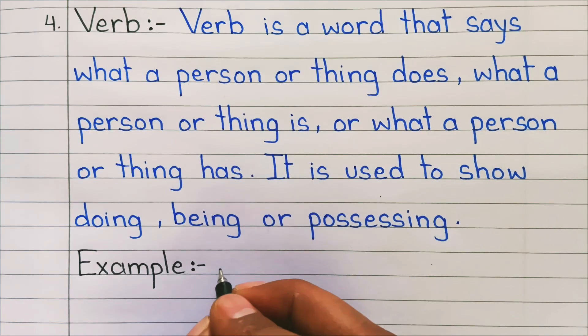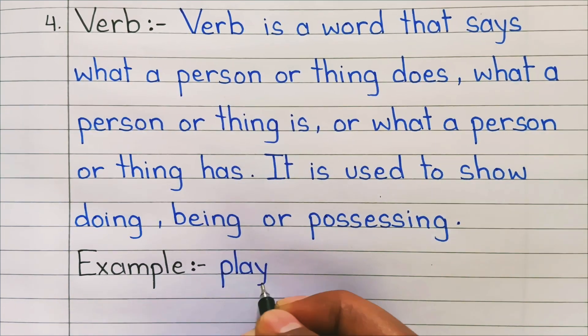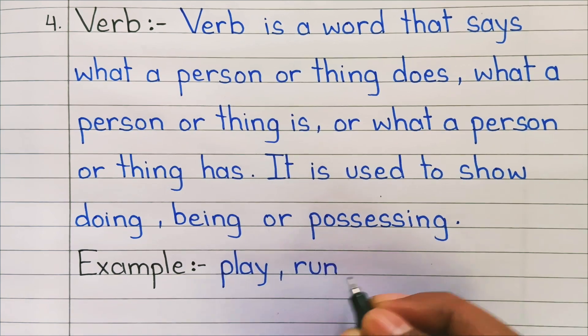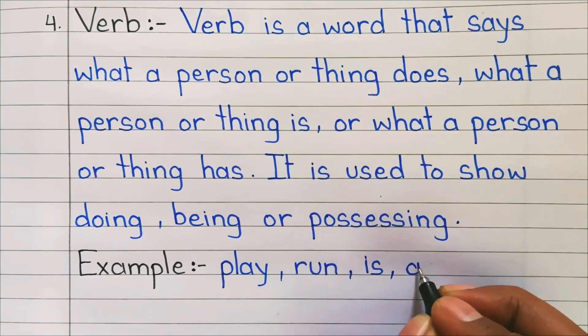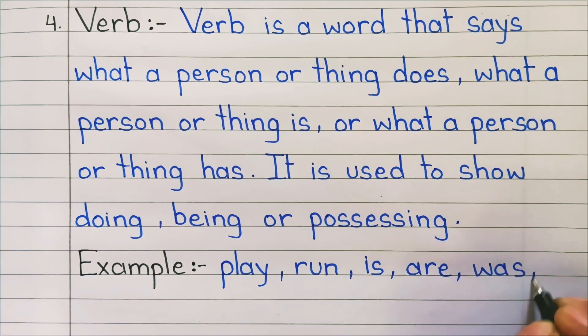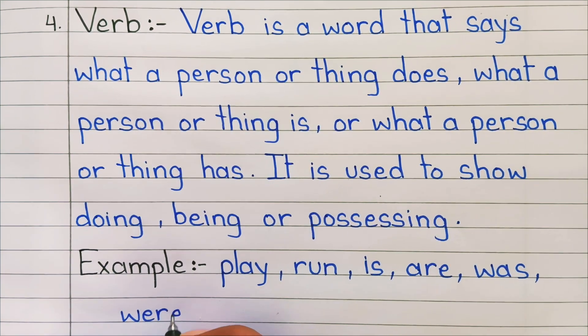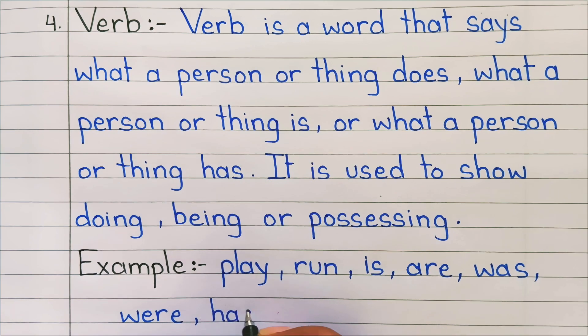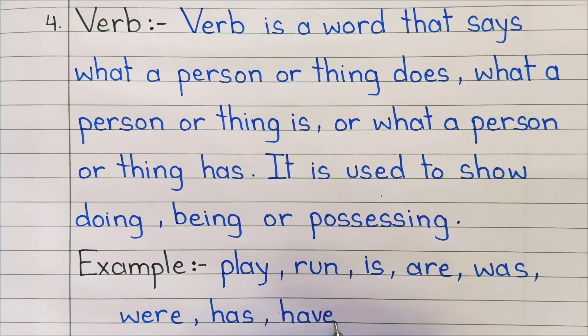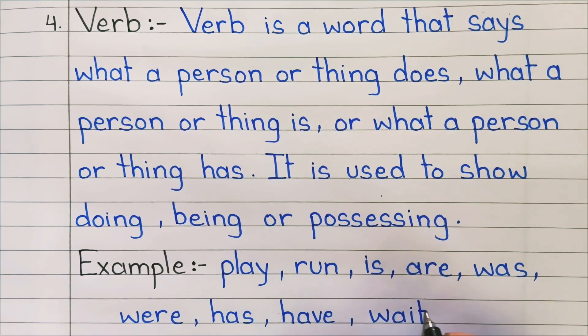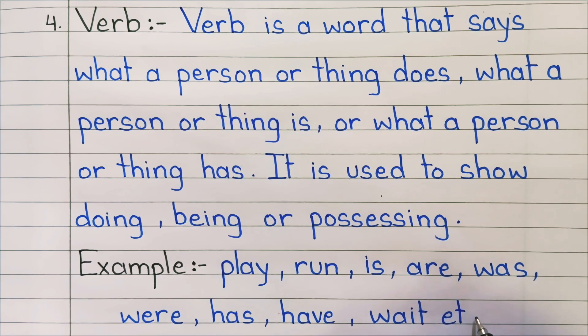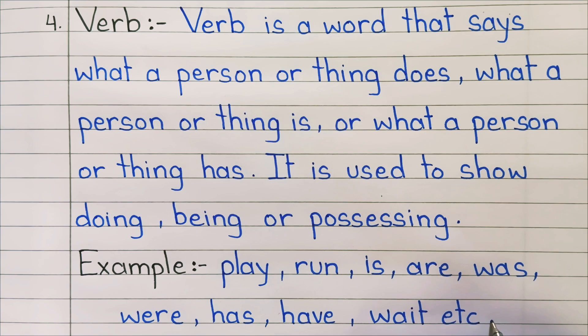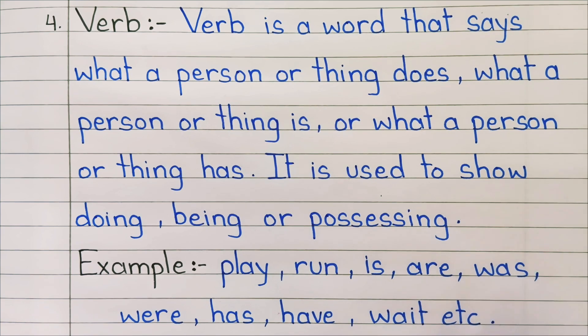4. Verb: Verb is a word that says what a person or thing does, what a person or thing is, or what a person or thing has. It is used to show doing, being, or possessing. Examples: play, run, is, are, was, were, has, have, wait, etc.